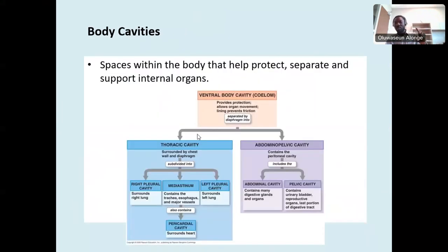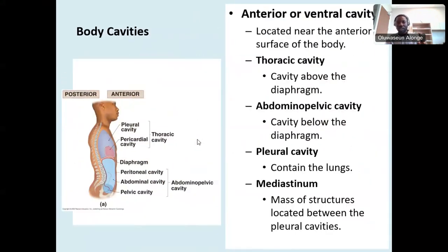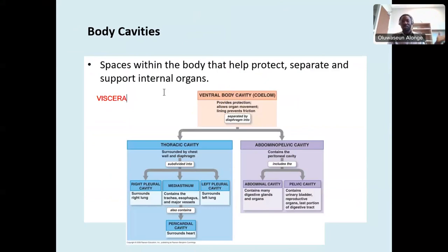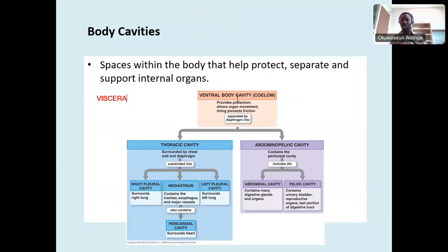Body cavities are areas inside your system that have spaces and contain organs. The organs inside body cavities are called visceral organs. For example, the heart, lungs, and brain are visceral organs — they are inside body cavities. There are ventral body cavities, which are in the frontal area, and you think about the thoracic cavity, which is the chest area containing the lungs.